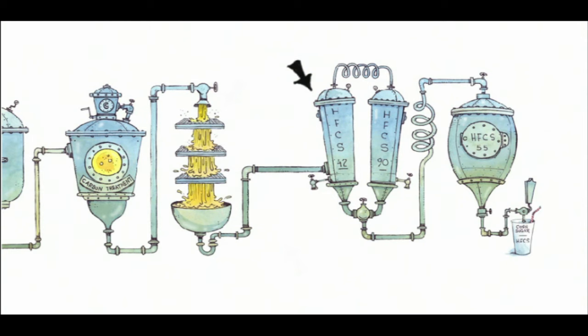Some of the HFCS 42 then goes through a liquid filtration process to increase the fructose content, creating a liquid that is 90% fructose. This product is called HFCS 90.